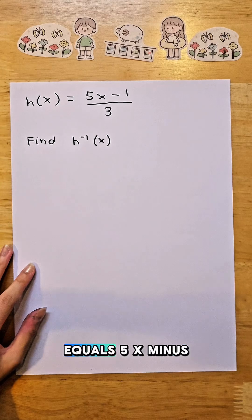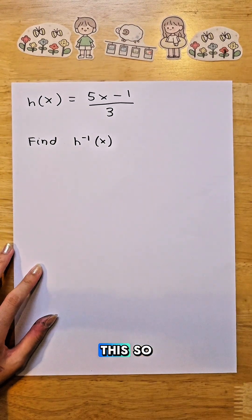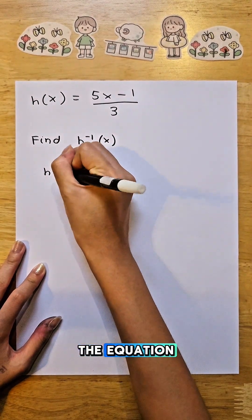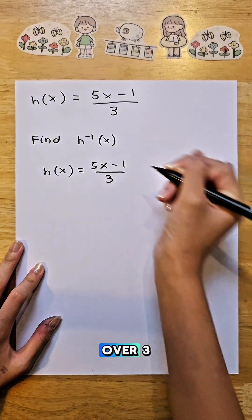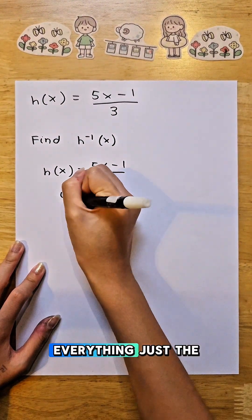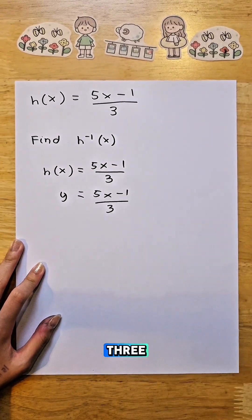We have the equation h(x) = (5x - 1)/3. We have to find h⁻¹(x). So how do we do this? First, write down the equation h(x) = (5x - 1)/3. Now replace h(x) with y and write everything the same way: y = (5x - 1)/3.